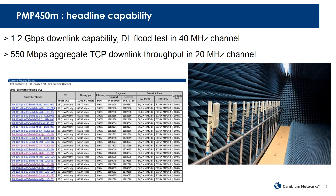The headline capability of the 450M is impressive. Our hardware and software development process requires frequent radiated tests in an anechoic chamber, such as the one shown in the photograph. The radiated testing is considered representative of the RF propagation environment in the vicinity of an access point mounted on a tower, free of local obstructions. In this testing, the PMP450M achieves greater than 1.2 Gbps sector throughput in a 40 MHz channel with a downlink-only data stream. Even with downlink TCP testing, which has a significant uplink packet rate, the 450M achieves greater than 550 Mbps in a 20 MHz channel.